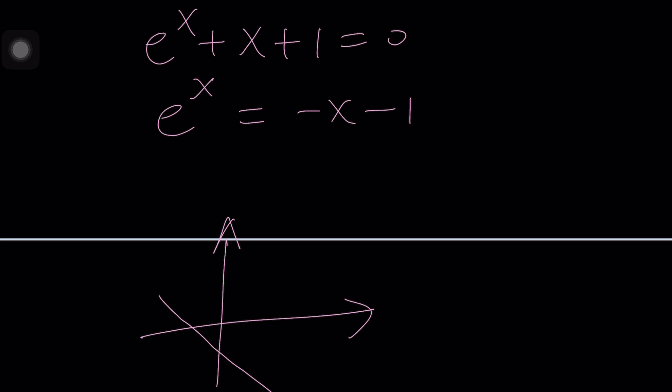And then we have the E to the X. Again, the same scenario applies. They're going to intersect at a single point. Why? One is decreasing. One is increasing. So get the idea?